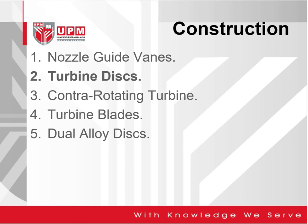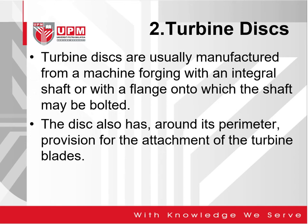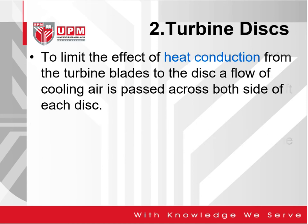Now we can look into the construction of the turbine disk. The turbine disk is usually manufactured from a machined forging, with an integral shaft or with a flange onto it; the shaft may also be bolted. The disk also has around its perimeter provisions for the attachment of the turbine blades. To limit the effect of heat conduction from the turbine blades to the disk, a flow of cooling air is passed across both sides of the disk.